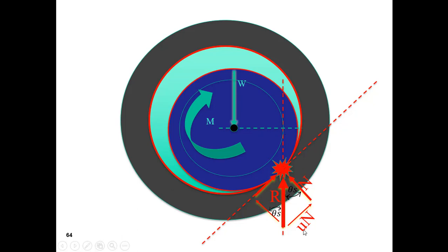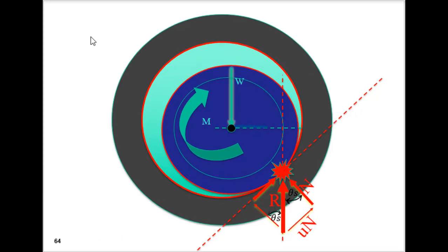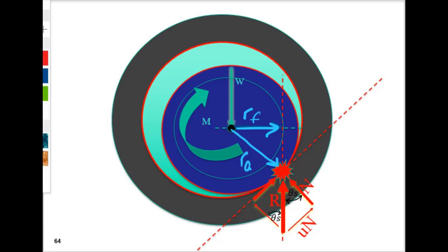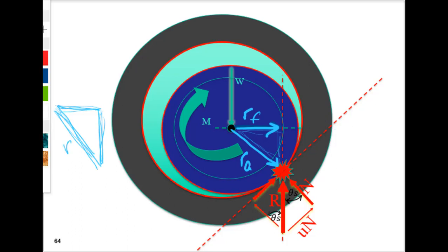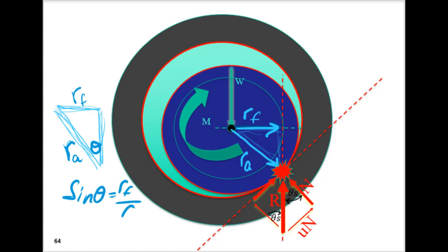The friction radius is related to the friction coefficient. Drawing from the center to the line of action of the force gives one radius; we also know the axle radius. Putting these into a right triangle — a blue triangle with the friction radius and the axle radius — we can relate them through the angle theta. So sine of theta equals friction radius over axle radius.